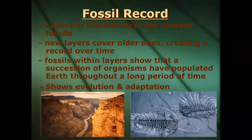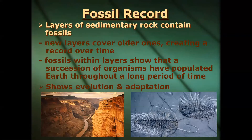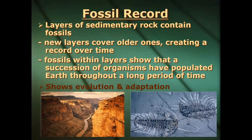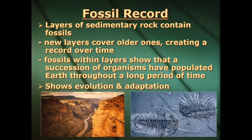First, let's look at the fossil record. This is where we have evidence of life that existed in the past because their bones, skeletons, and bodies get trapped in sedimentary rock. New layers cover older ones, creating a record in time. Usually when we find fossils in these layers, we see almost a succession of how organisms have populated this planet over millions and billions of years, showing how some species have been slowly changing and adapting to the environment.